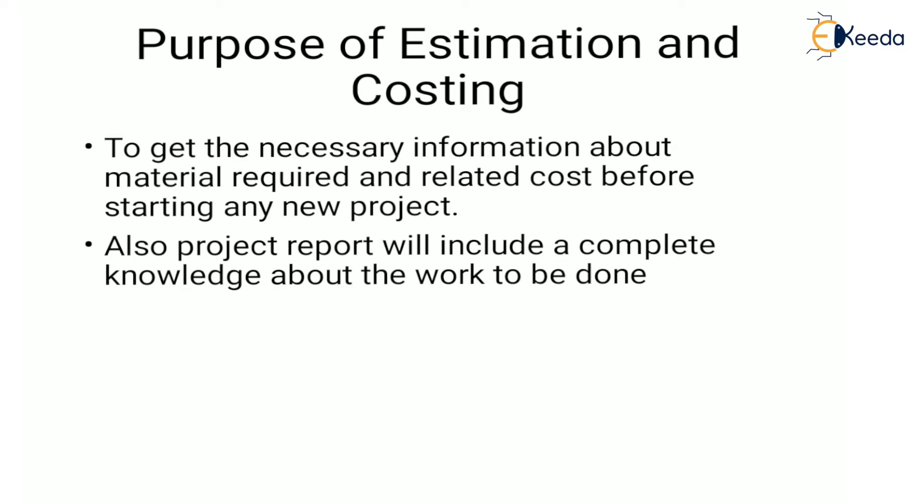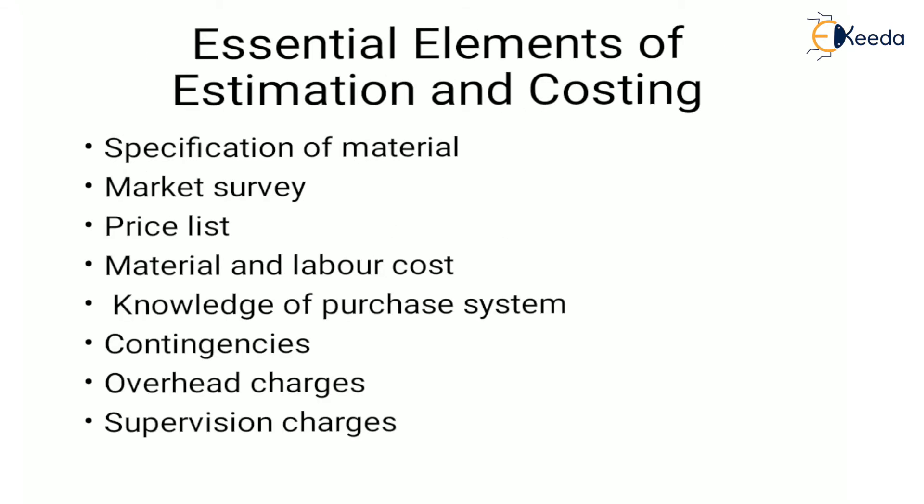Next are the essential elements of estimation and costing. The first one is specification of material. The specification and cost of all necessary material should be known at the time of preparing a report. It will be very difficult to purchase the material from the market without the knowledge of these specifications. Next is market survey — the market cost of material is that cost at which the material can be purchased.